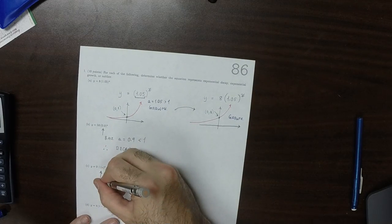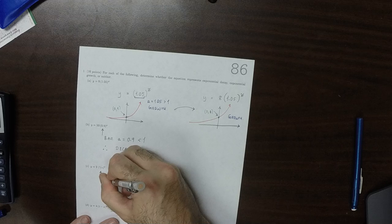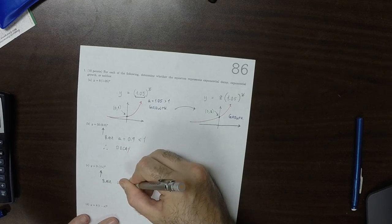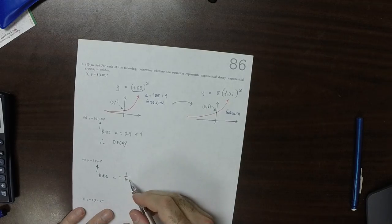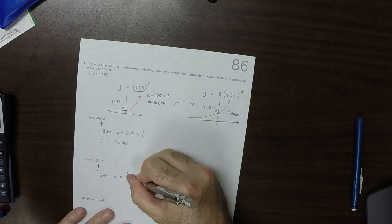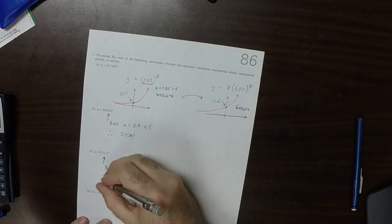This one, the base a equals 1 divided by pi, and pi is about 3, so that's less than 1. So again, it's decay.